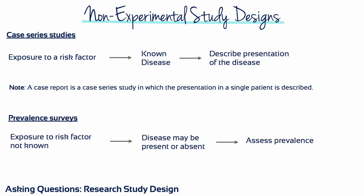Case series studies are used to describe the presentation of a disease. A case report is a special kind of case series study in which the presentation is of a single patient. Prevalence surveys are conducted to assess the prevalence of a specific disease in a specific time and a specific place.